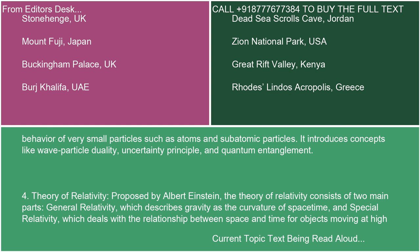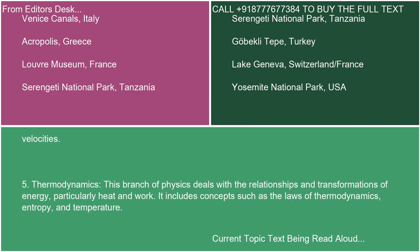4. Theory of Relativity. Proposed by Albert Einstein, the theory of relativity consists of two main parts: general relativity, which describes gravity as the curvature of space-time, and special relativity, which deals with the relationship between space and time for objects moving at high velocities.